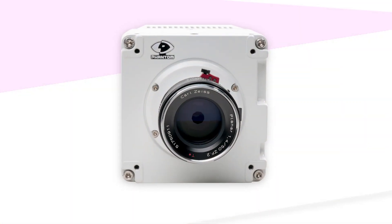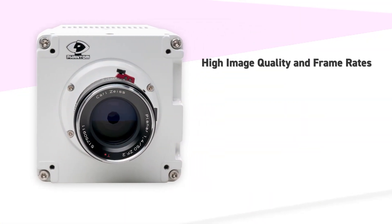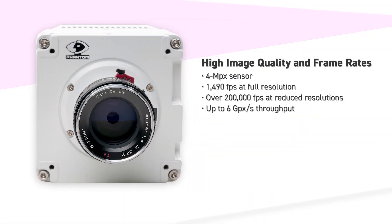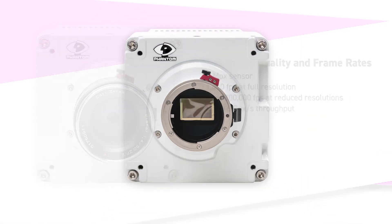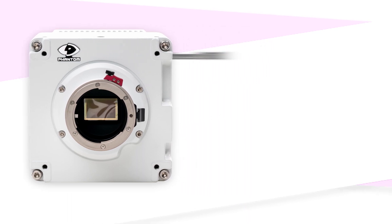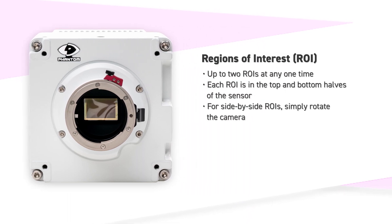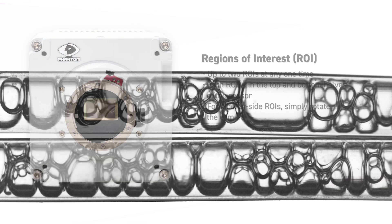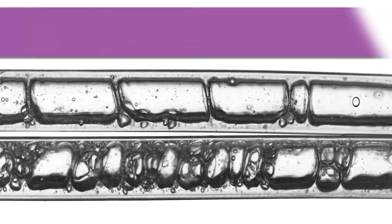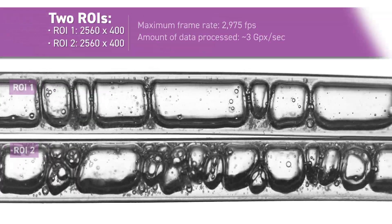Introducing the Phantom S641 machine vision camera, which offers the high frame rates and flexibility to image cytometry applications like never before. Among its many advanced characteristics, it includes a new regions of interest feature that lets users process two events at once, unlocking an ability to run two cytometry experiments at the same time.